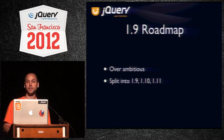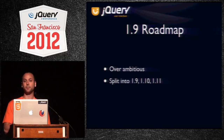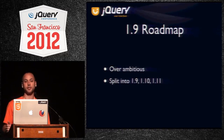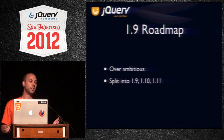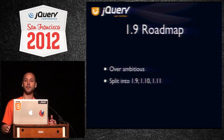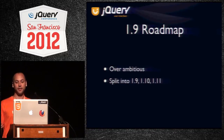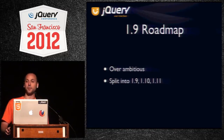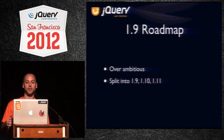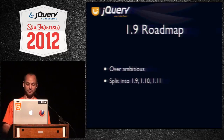1.9 is still a massive undertaking, and 1.10 was going to be almost as big. We ended up, only a few weeks ago, splitting 1.10 into 1.10 and 1.11 because we were talking to the Drupal team and they have some issues that they need resolved — specifically accessibility concerns with the dialogue widget — that they want to get into Drupal 8. With the roadmap we had, we wouldn't have gotten it out in time for their code freeze. So we decided to split 1.10 into 1.10 and 1.11 and get dialogue out in time for them, which should get you 1.10 quicker.